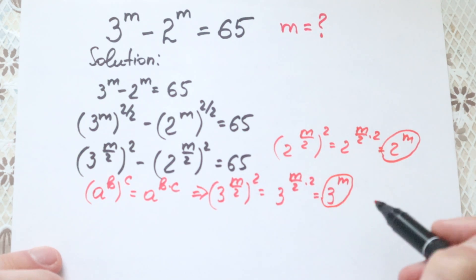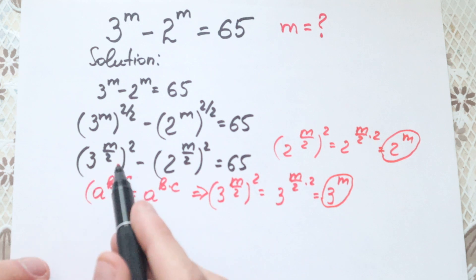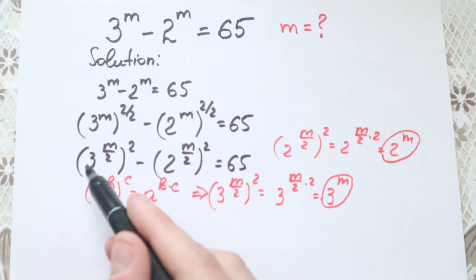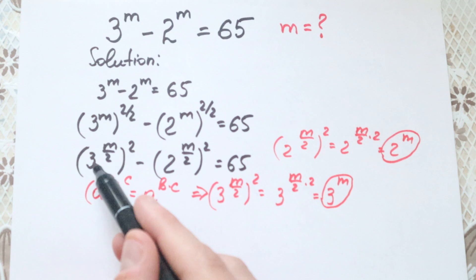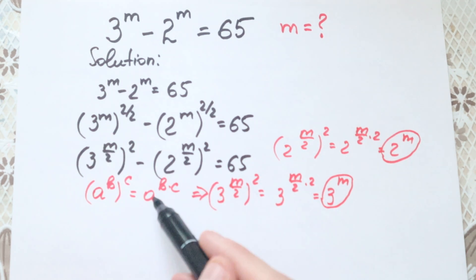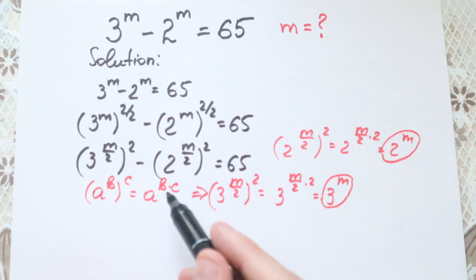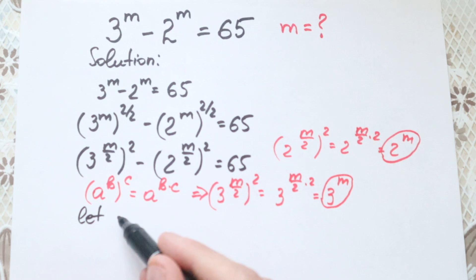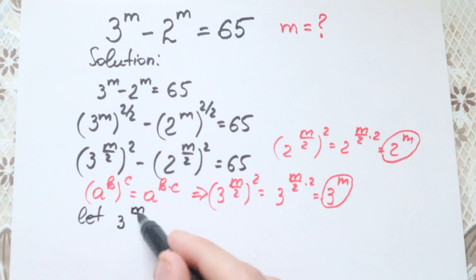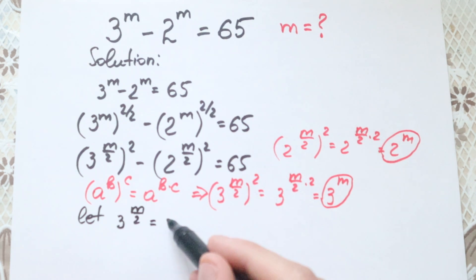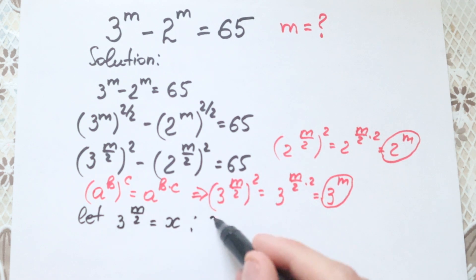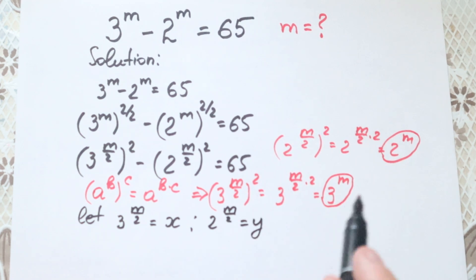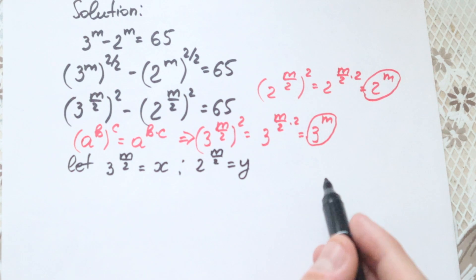We can easily use this substitution. Right now we have 3 to the power m over 2 and 2 to the power m over 2. It will be easier to make a substitution. Let 3 to the power m over 2 equal to x, and 2 to the power m over 2 equal to y. We make a substitution and work with it.